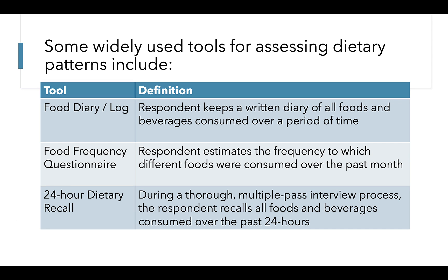We currently have three main ways of assessing dietary patterns, all of which are subjective approaches, wherein we must rely on the patient or participant to self-report or record their dietary intakes. These approaches include a food or diet log, where the respondent keeps a written diary of all foods and beverages consumed over a period of time; a food frequency questionnaire, typically used in large epidemiological studies of dietary patterns, where the respondent estimates the frequency to which different foods were consumed over the past month or a period of time; and a 24-hour dietary recall interview, where an interviewer uses a multiple-pass interview process to have the respondent recall all foods and beverages consumed over the past 24 hours.